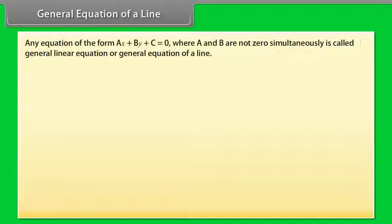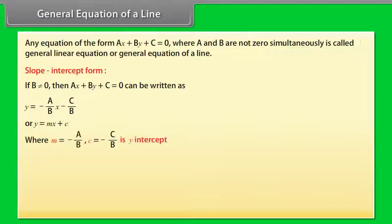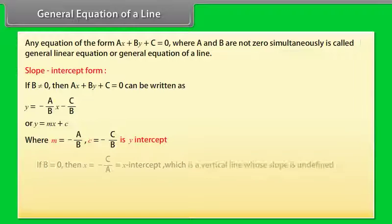General equation of a line. An equation of the form ax + by + c = 0, where a and b are not both zero, is called the general linear equation or general equation of a line. Slope-intercept form: If b ≠ 0, then ax + by + c = 0 can be written as y = (−a/b)x − (c/b), or y = mx + c, where m = −a/b and the y-intercept is −c/b. If b = 0, then x = −c/a is a vertical line whose slope is undefined.